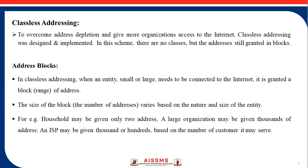In classless addressing, there are no classes but addresses are still granted in blocks. When an entity, small or large, needs to be connected to the internet, it is granted a block — that means a range of addresses. The size of the block, meaning the number of addresses, varies based on the nature and size of the entity. For example, a household may be given only two addresses, a large organization may be given thousands of addresses, and an ISP may be given hundreds of thousands based on the number of customers it serves.